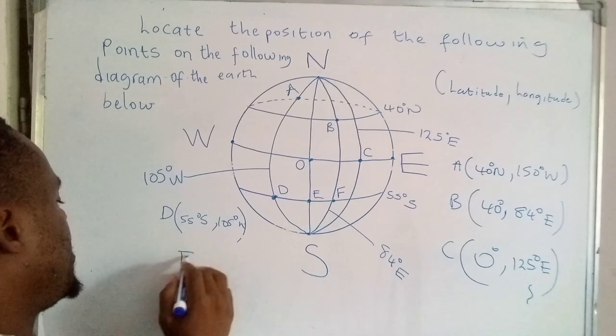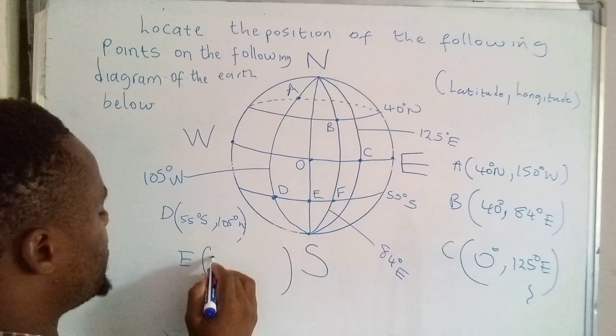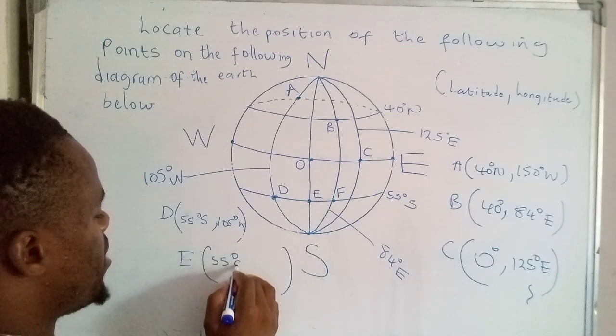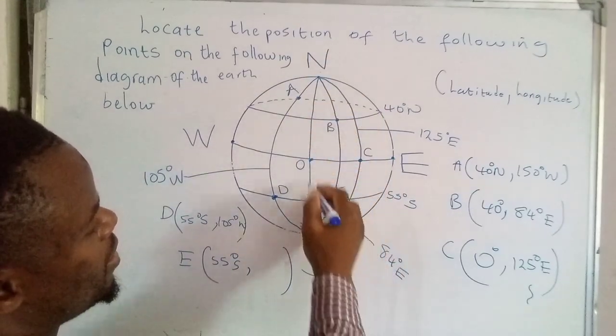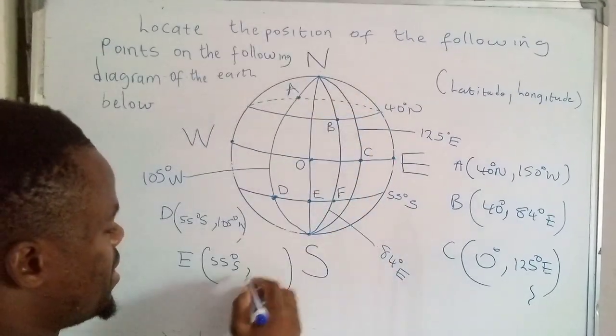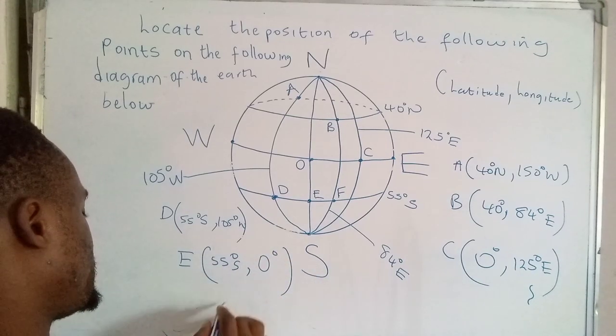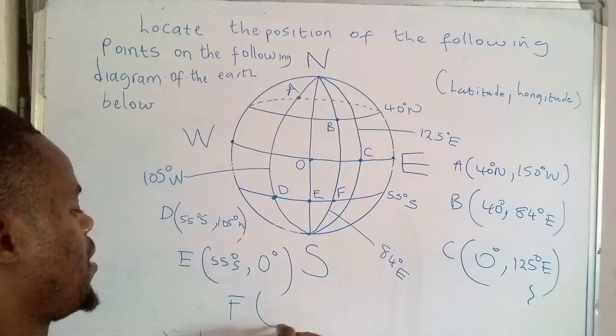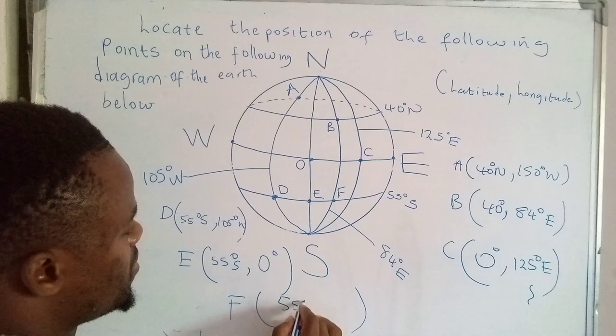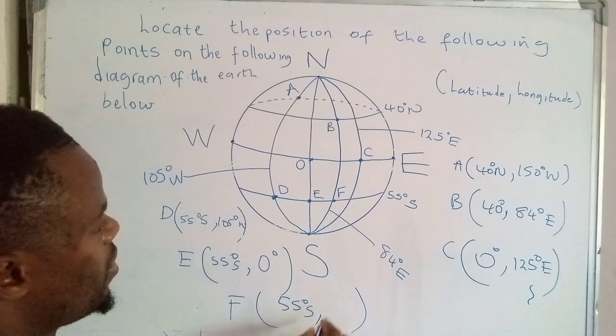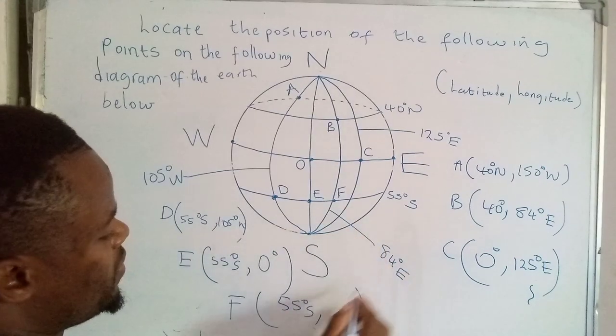Let's move on to E. E is sitting on 55 degrees south of the latitude. And what's the longitude? So this is actually the center. That's the Greenwich meridian. So that's zero degrees. Let's check out F. F is actually on 55 degrees south. And then what's the longitude? The longitude is 84 degrees east.